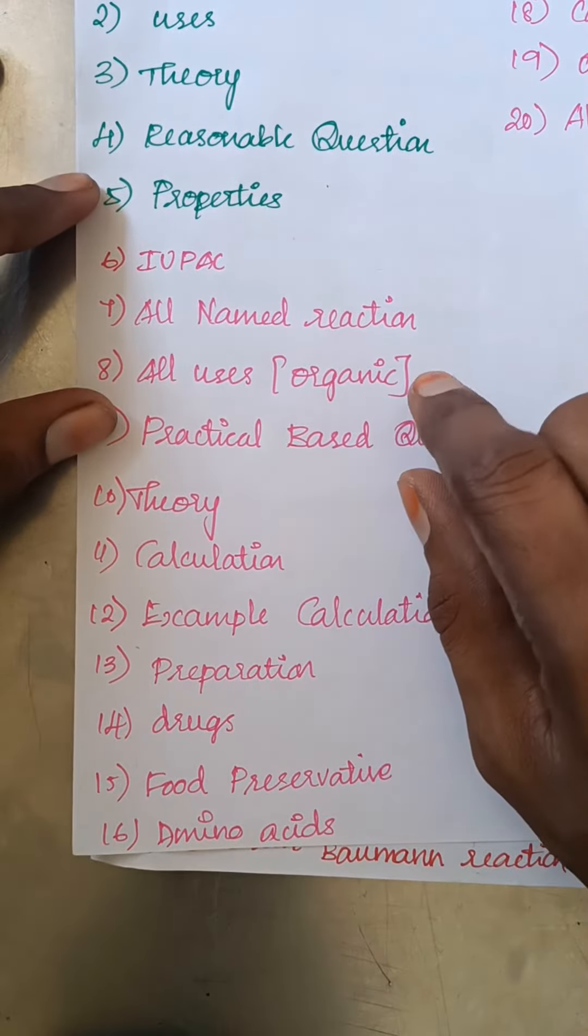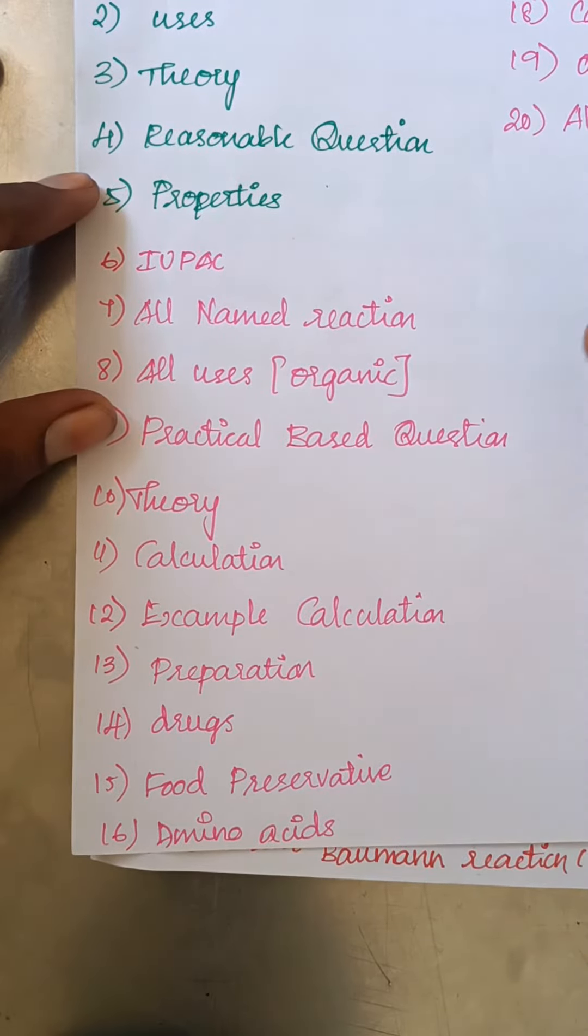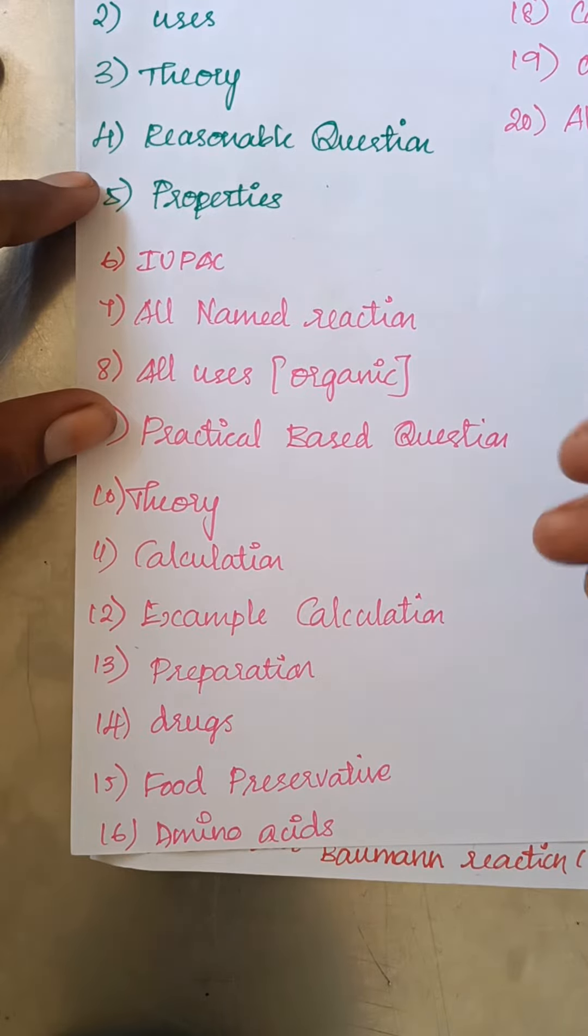All uses organic. For example, uses of methanol, uses of ethanol, phenol, anisole uses. We will talk about all of the uses.